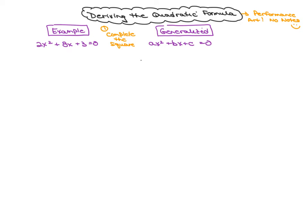The first step is I need a to be one, so I'm going to divide both sides of this equation by two. I'll get x squared plus four x plus three halves, keeping that as a fraction, equal to zero. Doing the same thing on the generalized version, I divide both sides by a, which gives me x squared plus b divided by a times x, plus c divided by a, equals zero.